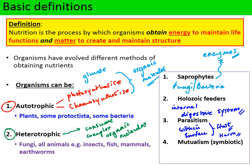Mutualism is where two types of organism have a beneficial relationship. Ruminants like the cow or sheep have one part of their stomach called the rumen — the first chamber of a four-chambered stomach — which contains cellulase-secreting bacteria. These help to digest cellulose and allow organic acids to be produced that get absorbed by the cow for energy. In return, the cow offers these bacteria a protective environment in which to replicate and grow, so it's mutualistic.